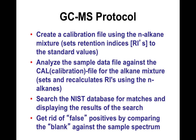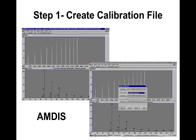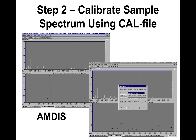AMDIS searches through the NIST database — the two are coupled and display best matches. Through that matching, some automatic and some manual, you can get rid of false positives present in the blank. The AMDIS tool creates a calibration file from alkane standards, reads them in, calculates retention indices, and then readjusts the spectrum so retention indices are properly calibrated.